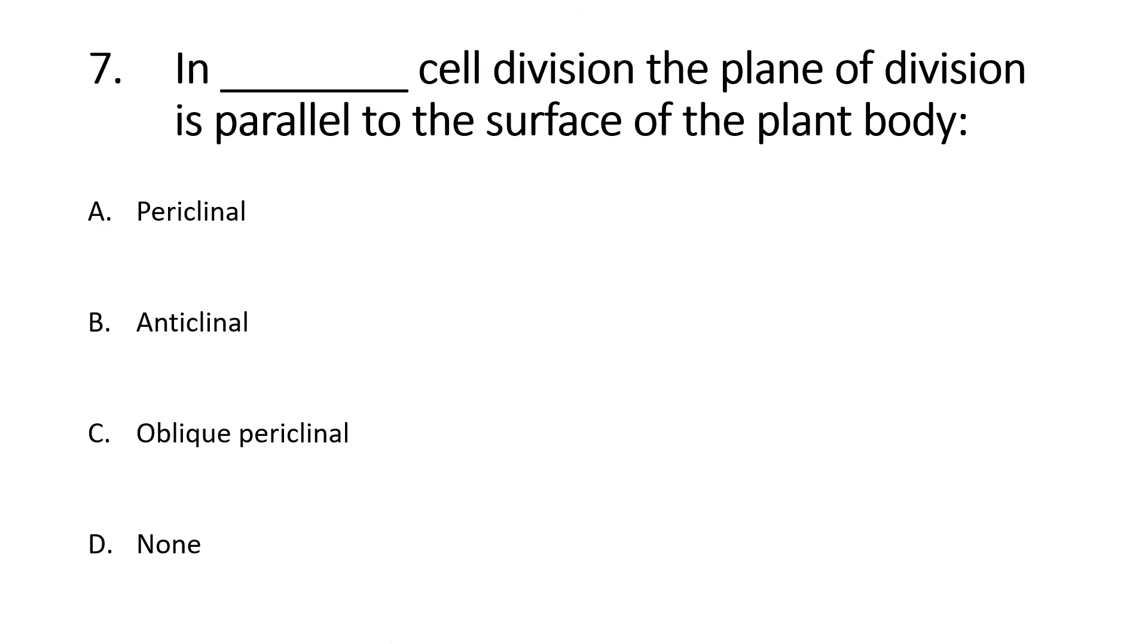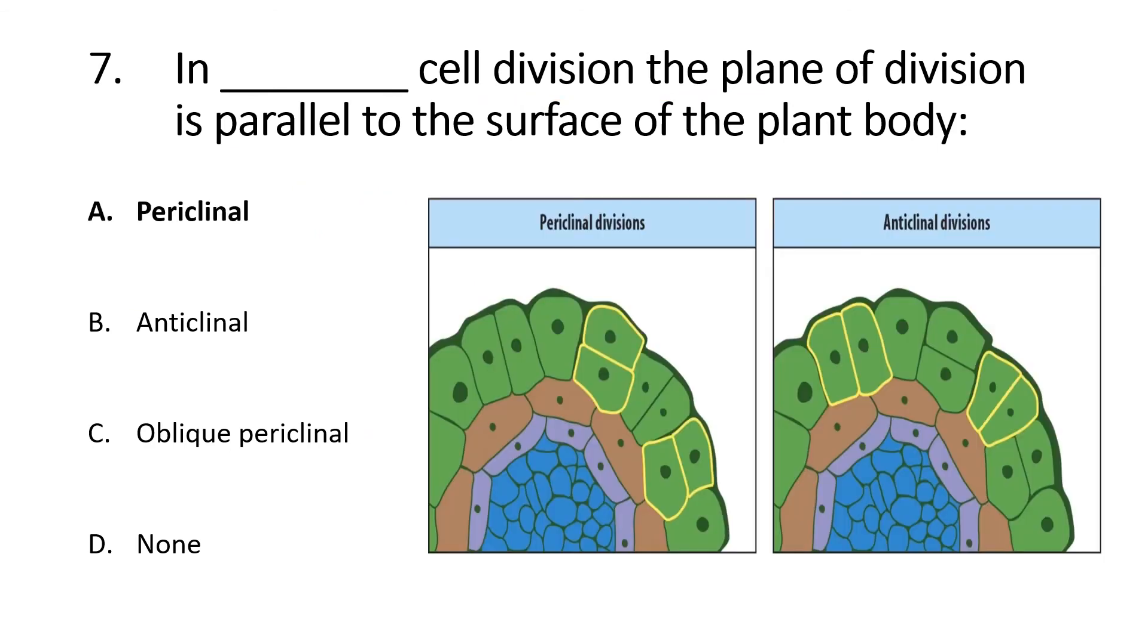In blank cell division, the plane of division is parallel to the surface of plant body. So first we understand cell division is parallel to the surface of plant body and organ and part. This is called periclinal. P for parallel. If cell division is parallel to the surface of plant body and organ and part, such cell division happens during leaf primordial development at margins of leaf surface. So in this case, the right answer is alpha, periclinal.